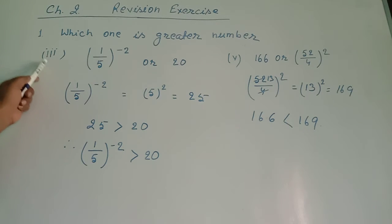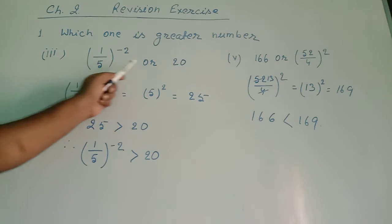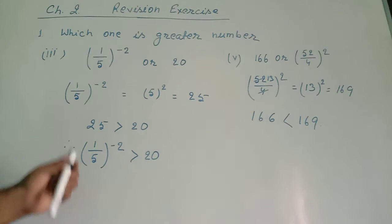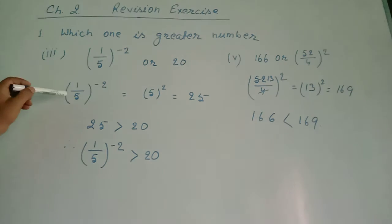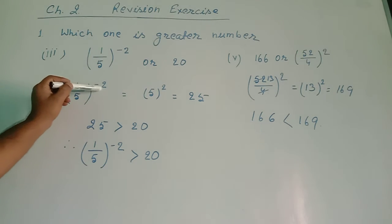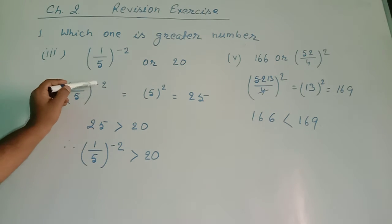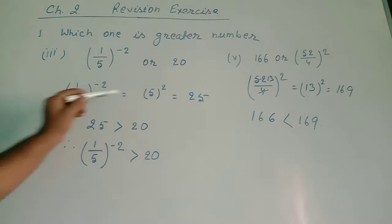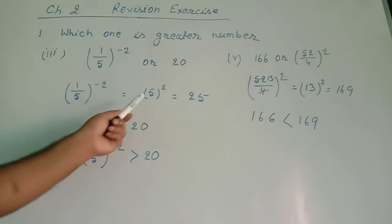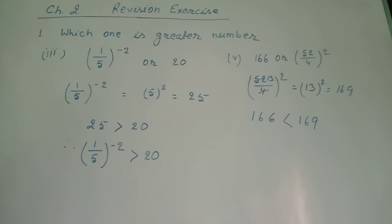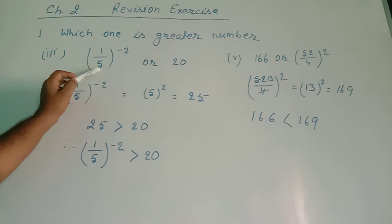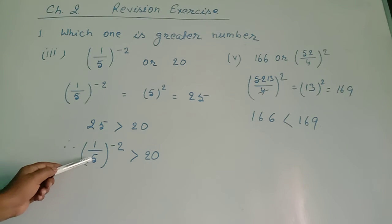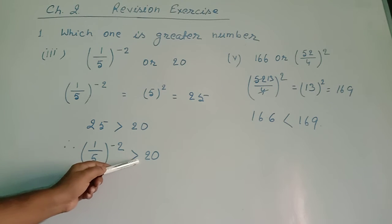In question number 1, Roma number 3: which is greater — 1/5^(-2) or 20? I simplified 1/5^(-2): the reciprocal of 1/5 is 5, so 1/5^(-2) equals 5^2 equals 25. Comparing: this value is 25 and the other is 20. Since 25 is greater than 20, therefore 1/5^(-2) is greater than 20.